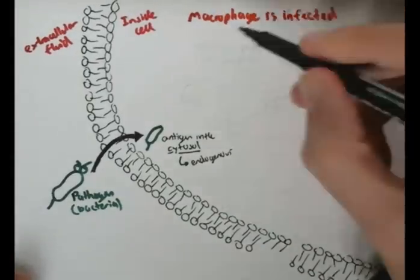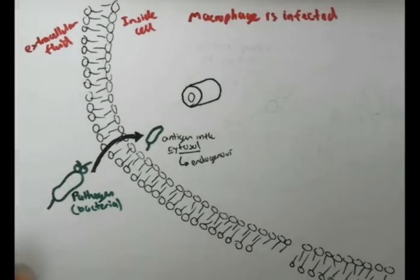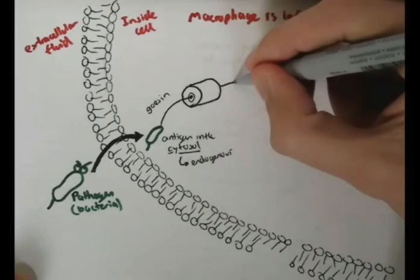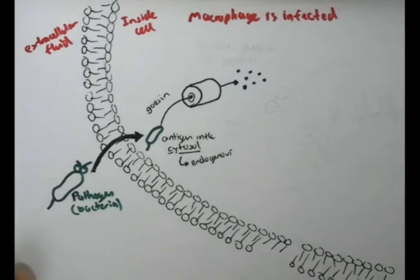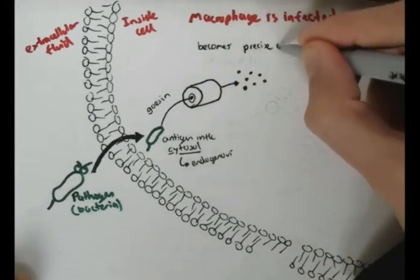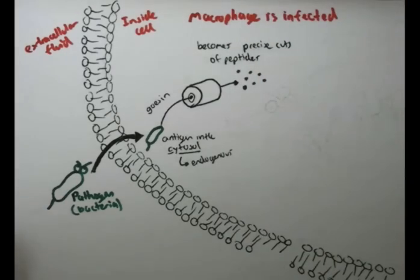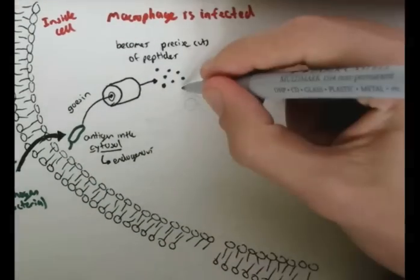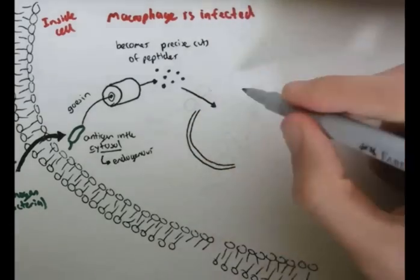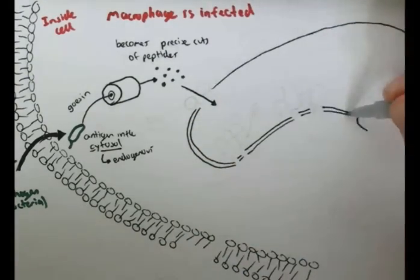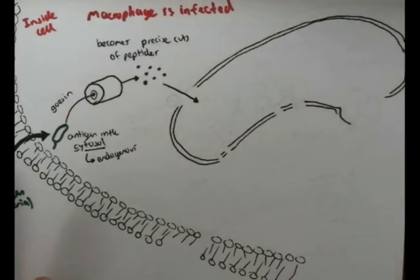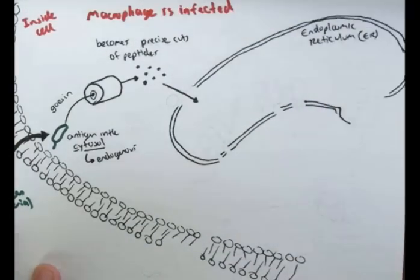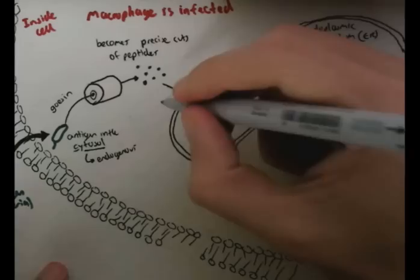The cell fortunately has a cylindrical protein called proteosome. And so this endogenous substance goes into this proteosome and gets chopped up into fine-shaped peptides. Now these peptides are floating in the cytosol, and these peptides then enter the endoplasmic reticulum, or ER, within the cell through a channel called the TAP transport.